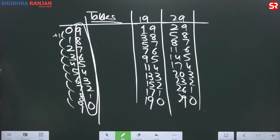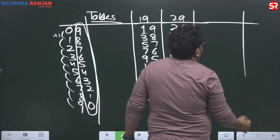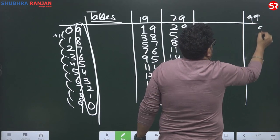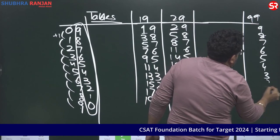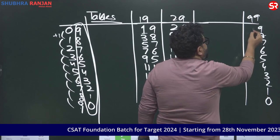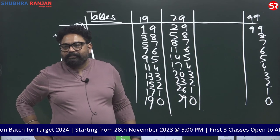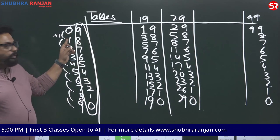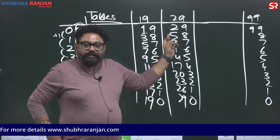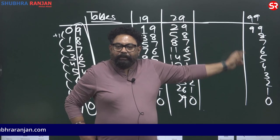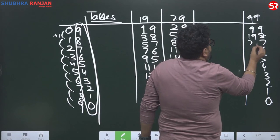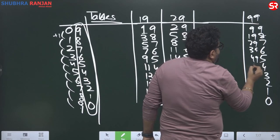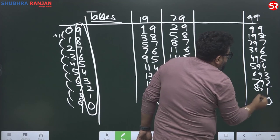Now, all tables ending with 9 are sorted. Table of 99! 9, 8, 7, 6, 5, 4, 3, 2, 1, 0. 99 ones are 99. What do we add? Plus 10! So: table of 9 plus 1, table of 19 plus 2, table of 29 plus 3, table of 99 plus 10. So 9, 19, 29, 39, 49, 59, 69, 79, 89, 99 — over. All tables ending with 9 are finished.